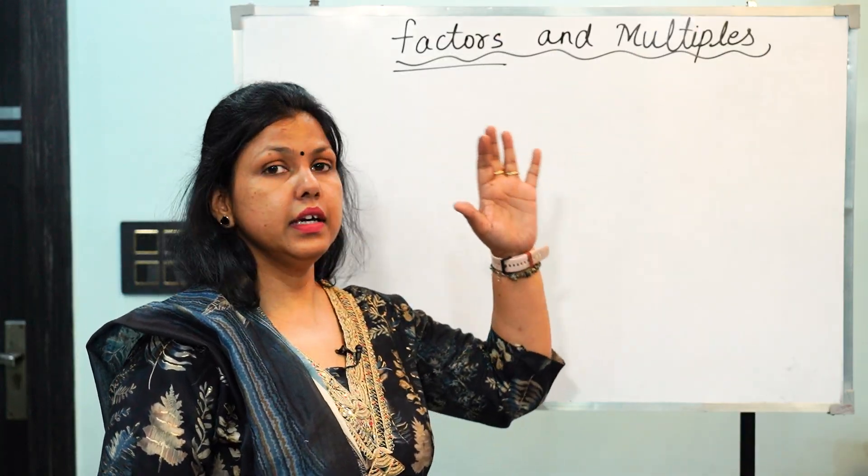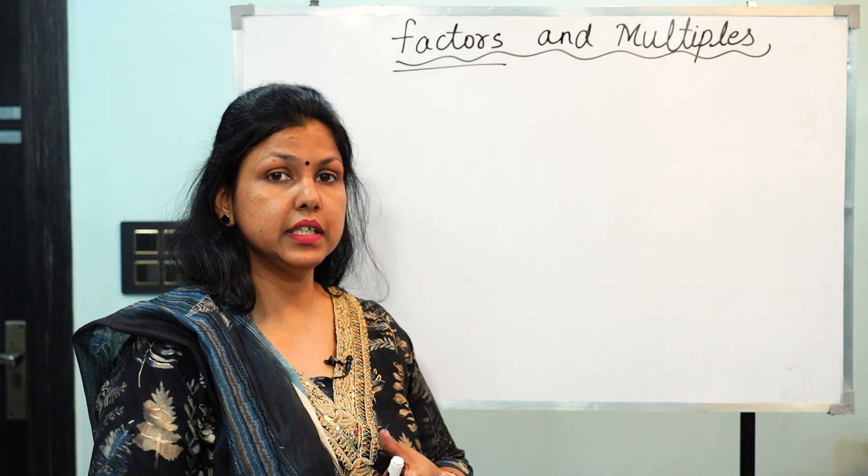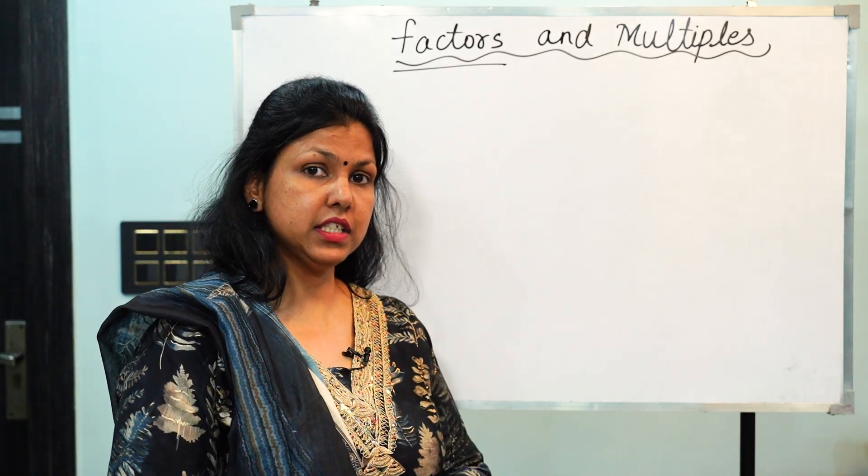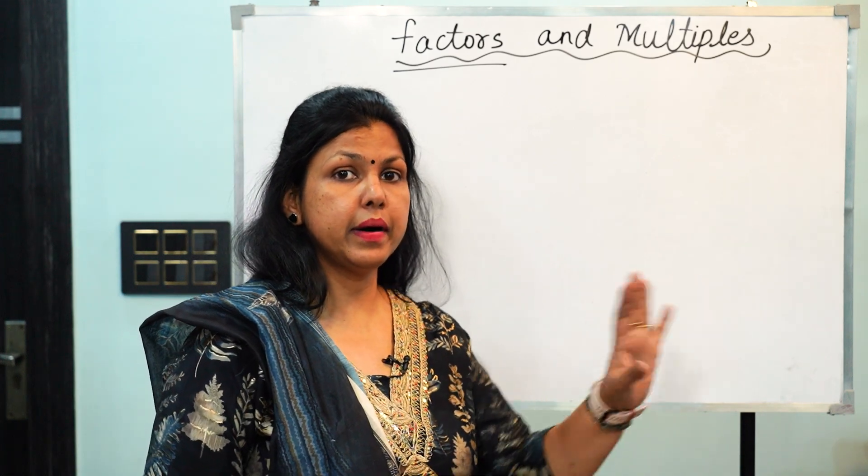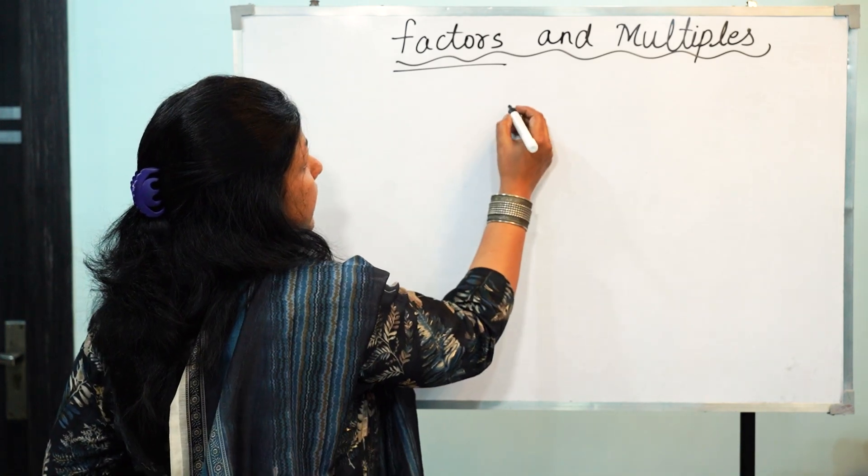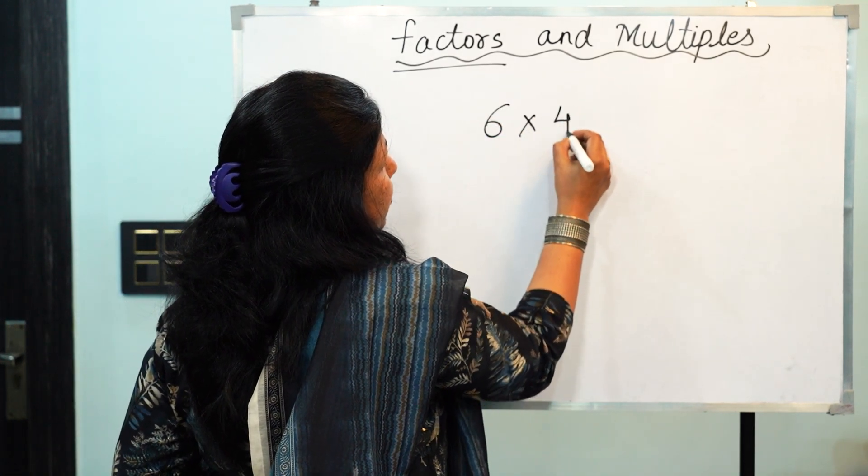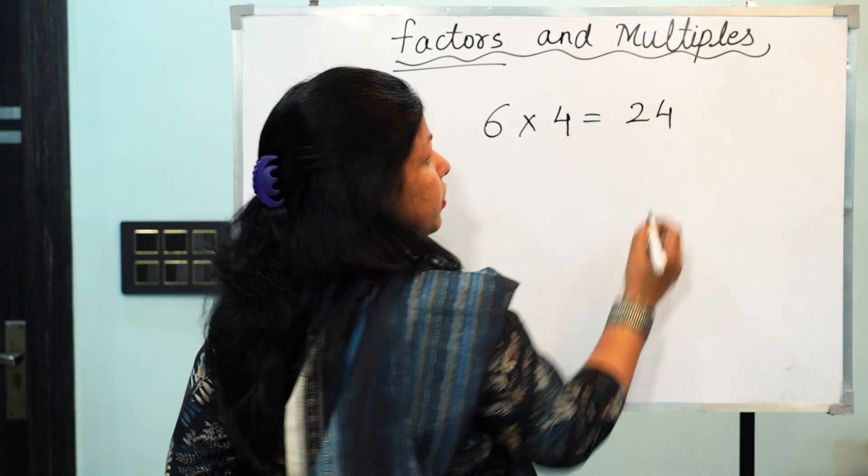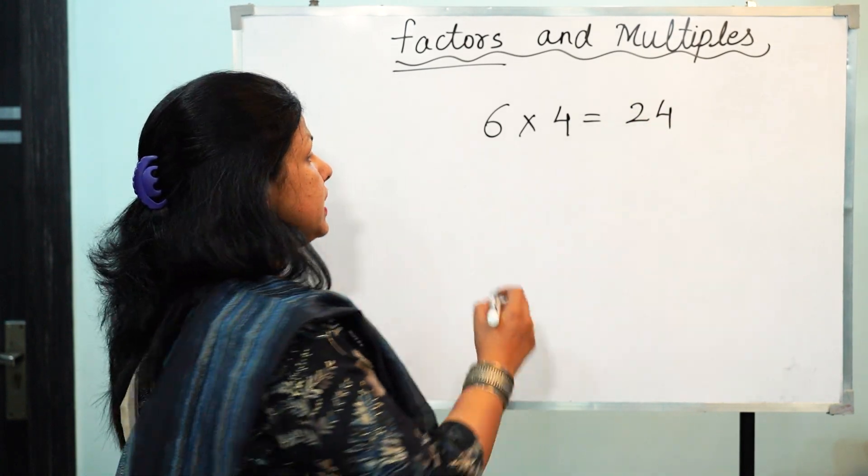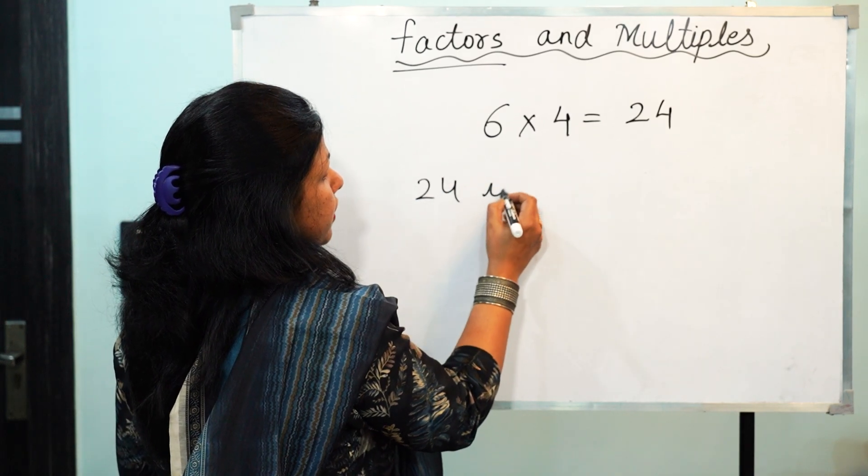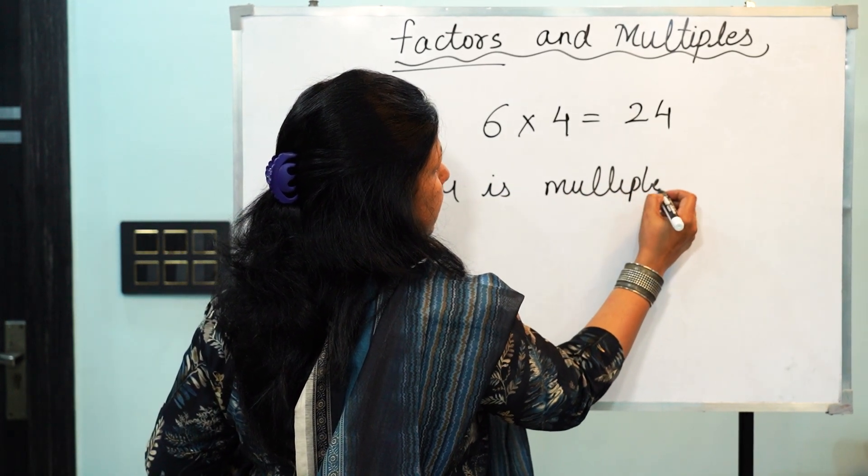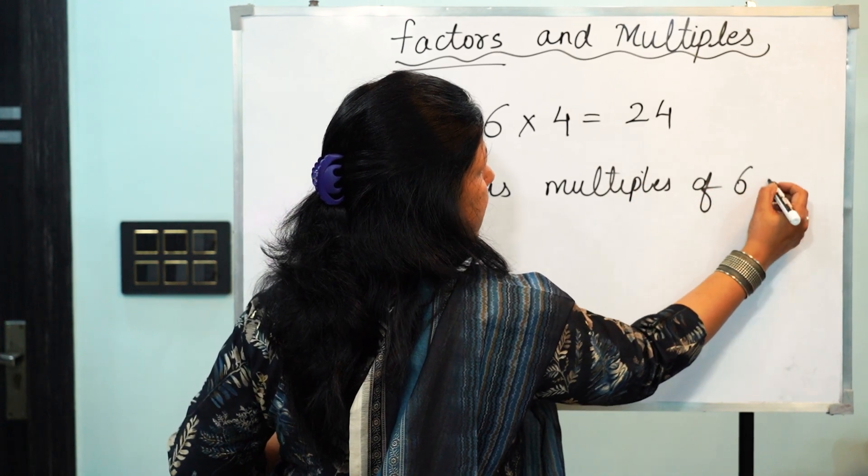So children, in this video we are going to learn about multiples. Multiples are the numbers which we can get when we multiply a number by another number. For example, if we say 6 and 4 multiplied together gives me 24, so I can say 24 is the multiple of 6 and 4.